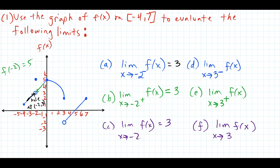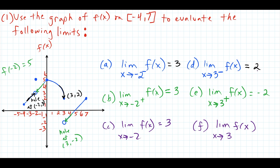The next location is the limit as x approaches 3 from the left side. Moving in from left to right, we're heading towards the point 3, 2. So the limit as x approaches 3 from the left is equal to 2. When we find the limit as x approaches 3 on the right side — moving in right to left — we're heading towards the hole at the point 3, negative 2. So that limit is equal to negative 2. Since the right and left side limits are not equal, the limit as x approaches 3 does not exist.